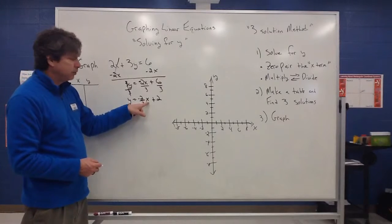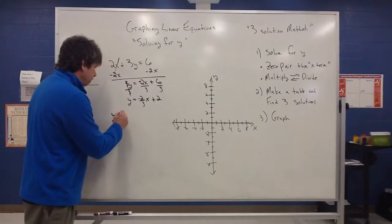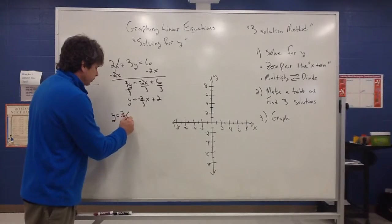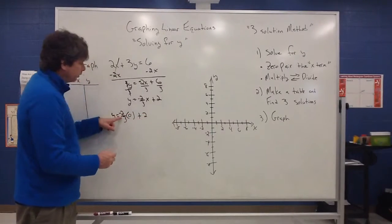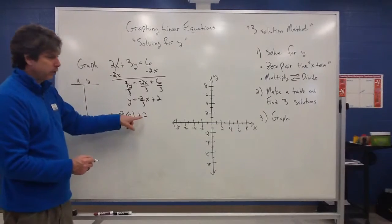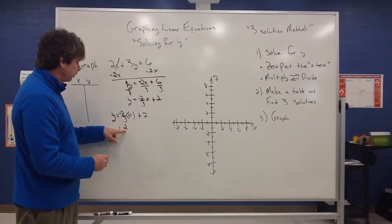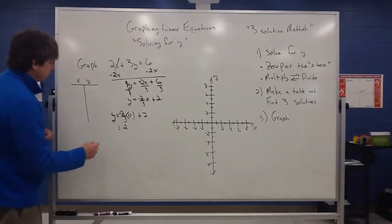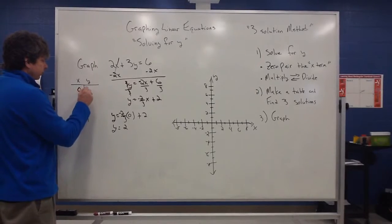And we do know that if I choose x to be zero, that's going to be a very easy number to play with. So if I have y equals negative 2 thirds x, and I put a zero there instead, we know that negative 2 thirds times zero is going to be zero. And then zero plus two is going to give me two. So if I put a zero in for x, y is going to equal two.